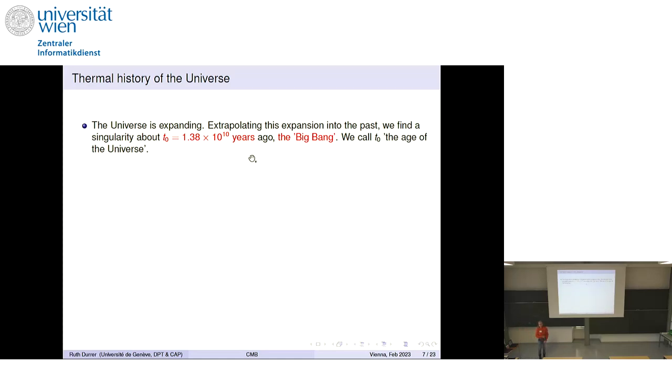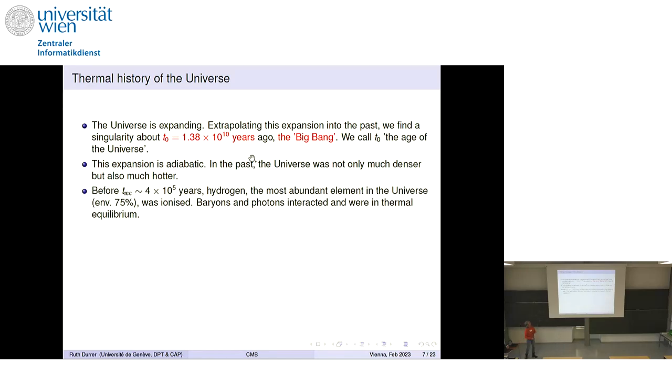Now let me briefly talk about the history of the universe. The universe is expanding. That has been observed already in the 20s. And if one extrapolates this expansion back into the past, one finds that there was a singularity of infinite curvature and infinite density about 10 to the 10 years ago. Of course, we know that somewhere this extrapolation must break down and it just means that our physical theory doesn't go this far back. We call this the Big Bang and we call T0 the age of the universe.